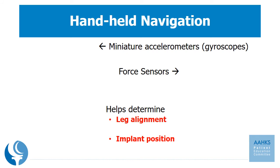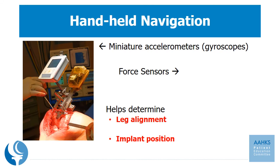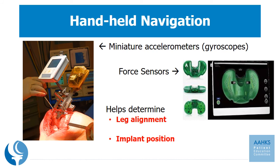Handheld navigation represents another form of computer-assisted surgery. One device uses a mini-accelerometer or gyroscope like the one found in your smartphone, while another uses a special force sensor. Both devices are used to help the surgeon determine proper leg alignment and position of the implant.